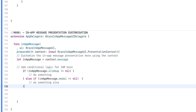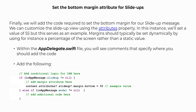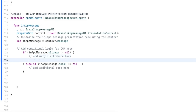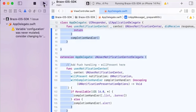You should find this at the bottom of your AppDelegate.swift file. Finally, we will add the code required to set the bottom margin for our slide up message. We can customize the slide up view using the attributes property. In this instance, we'll set a value of 55, but this serves as an example only. Margins should typically be set dynamically using, for instance, a percentage of the screen rather than a static value. Within your AppDelegate.swift file, look for the comment "add margin attribute here". It's now time to run our project and verify that the in-app message slide up is no longer blocking our menu bar.